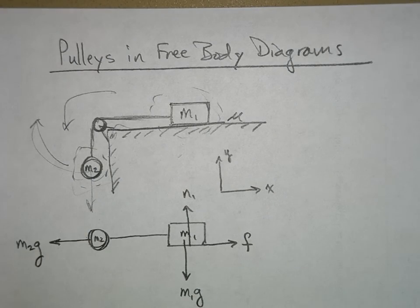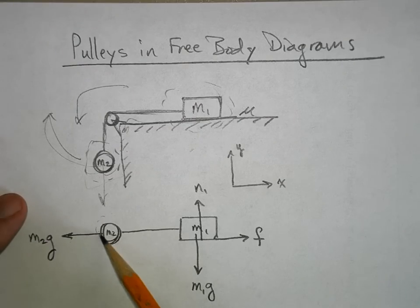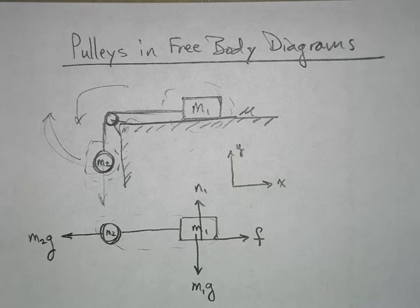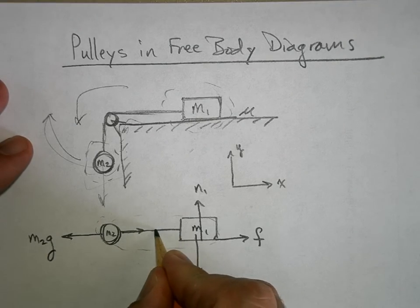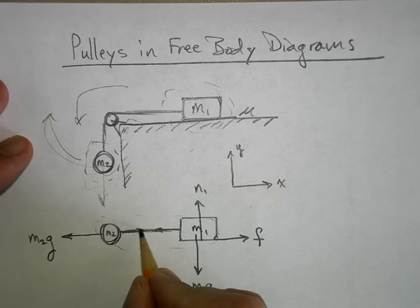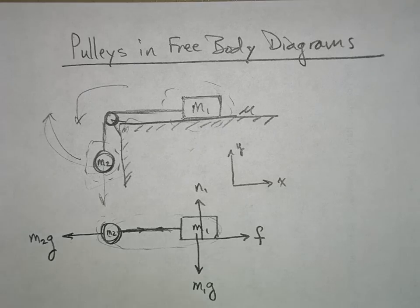Now everybody take a look at this. This is my free body diagram. Notice that what force have I not drawn on the free body diagram? The tension force. And the reason is because it's internal to my free body. Yeah, there's a tension force acting on m2, but there's an equal and opposite tension force on m1. So if it's all in the same free body diagram, they cancel each other out. So you don't even bother to draw them. Those are called internal forces, forces that are internal to the free body that you've drawn.